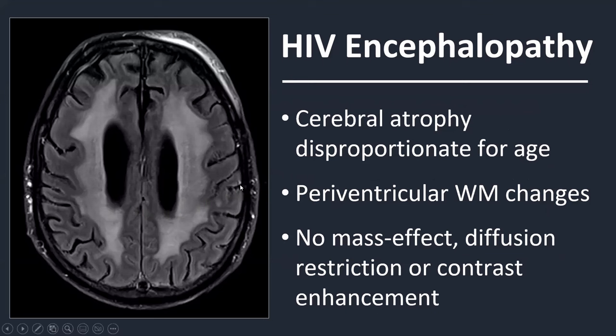On imaging we see cerebral atrophy disproportionate for the age of the patient, often very extensive confluent periventricular white matter changes with sparing of the U-fibers, and no mass effect, no diffusion restriction, and no contrast enhancement whatsoever.